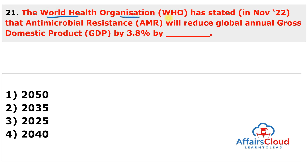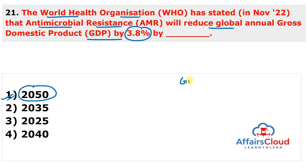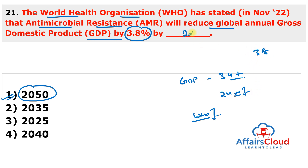Next question: The World Health Organization stated that in a high-impact scenario, antimicrobial resistance will reduce global annual GDP by 3.8% by the year 2050. If the situation remains unchecked in the next decade, it could result in a GDP shortfall of $3.4 trillion annually and push around 24 million people into extreme poverty.